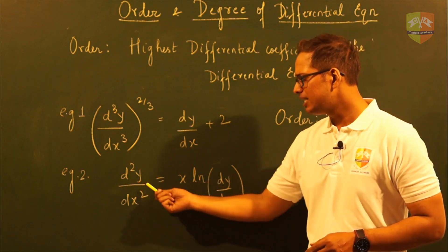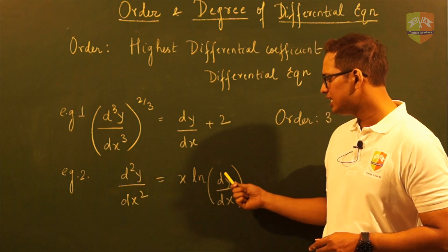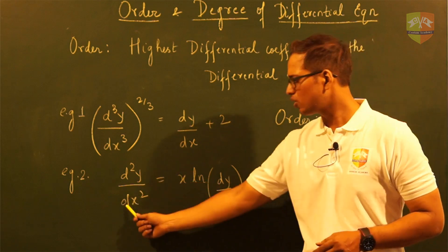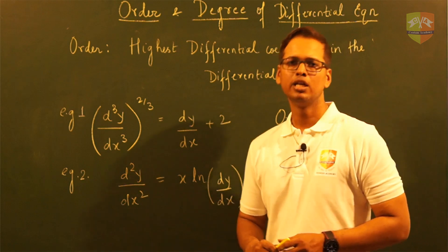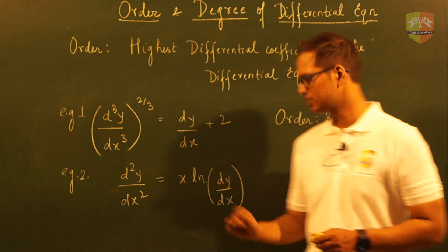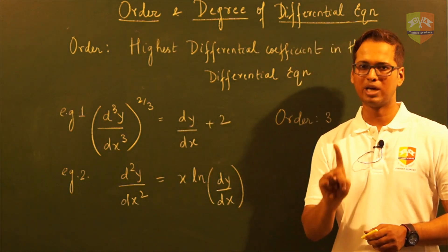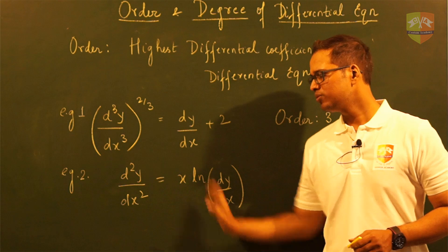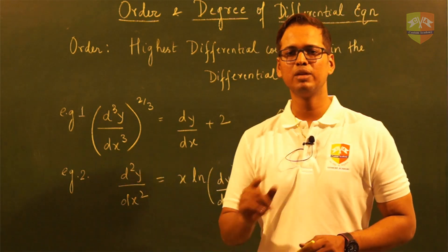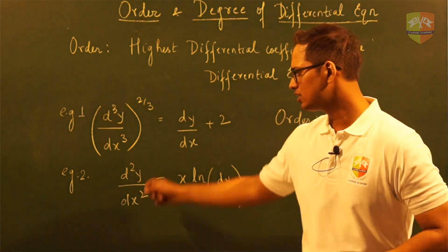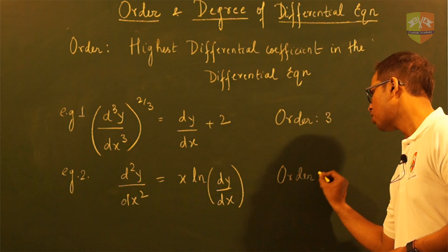Let's take example number 2. We have dy by dx and d²y by dx² equal to x ln(dy by dx). Out of these two, the highest order is given by d²y by dx² because here y has been differentiated twice with respect to x, whereas in this expression y has been differentiated once. So out of the two, since d²y by dx² is the higher, the order of this differential equation will be 2. So this is a differential equation of order 2.